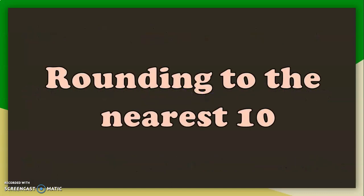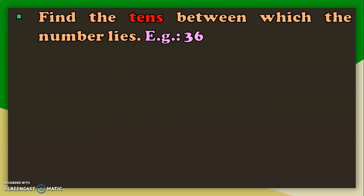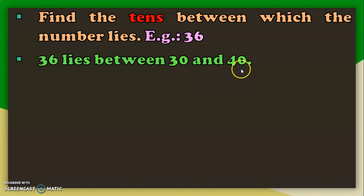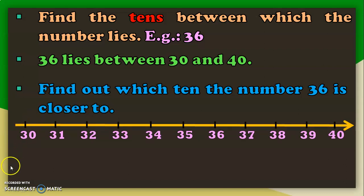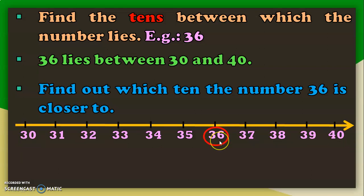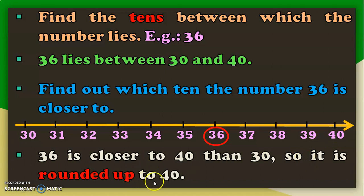First, let us see rounding to the nearest 10. To do that, find the tens between which the number lies. For example, take the number 36 — it lies between the tens 30 and 40. To round off, find out which ten the number 36 is closer to. A number line is an easy method for this. Here we have a number line with numbers from 30 to 40. Number 36 lies closer to 40, so it is rounded up to 40.